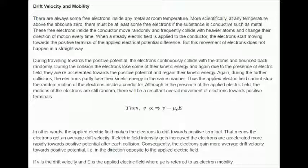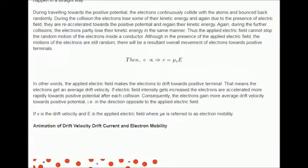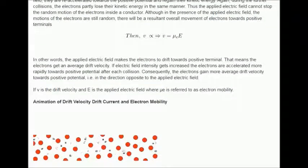If electric field intensity gets increased, the electrons are accelerated more rapidly towards positive potential after each collision. Consequently, the electrons gain more average drift velocity towards positive potential in the direction opposite to the applied electric field. If ν is the drift velocity and E is the applied electric field where μ is referred to as electron mobility.